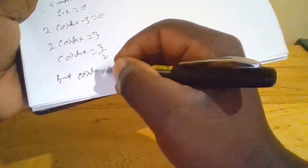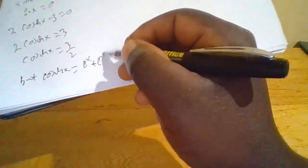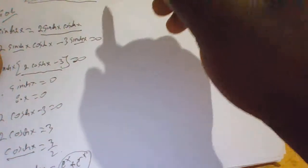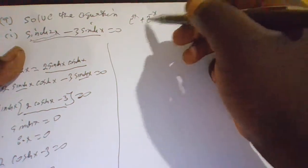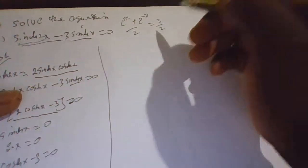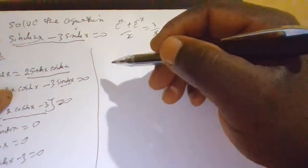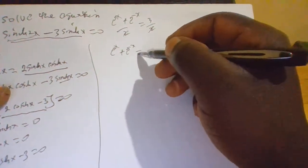But we know that cosh(x) equals the quantity e^x plus e^(-x) all over 2. Therefore we shall replace cosh(x) by that definition. So the equation becomes: e^x plus e^(-x), all over 2, equals 3 over 2. The 2s cancel, and we remain with e^x plus e^(-x) equals 3.